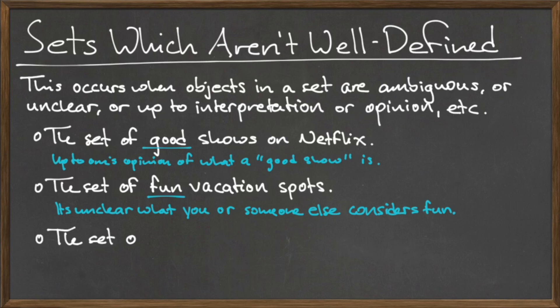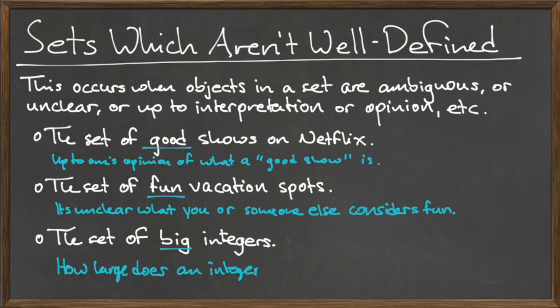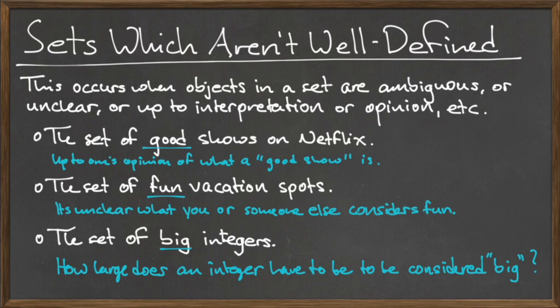Similarly, the set of big integers is not a well-defined set. Big may mean to be an integer over a thousand, while it may also mean to be an integer bigger than one million. Since there is no exact consensus as to what big means, this is not a well-defined set.